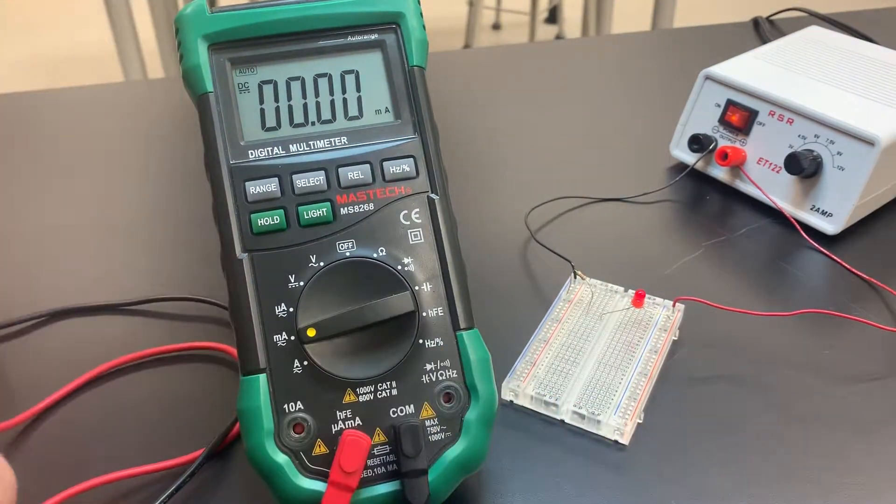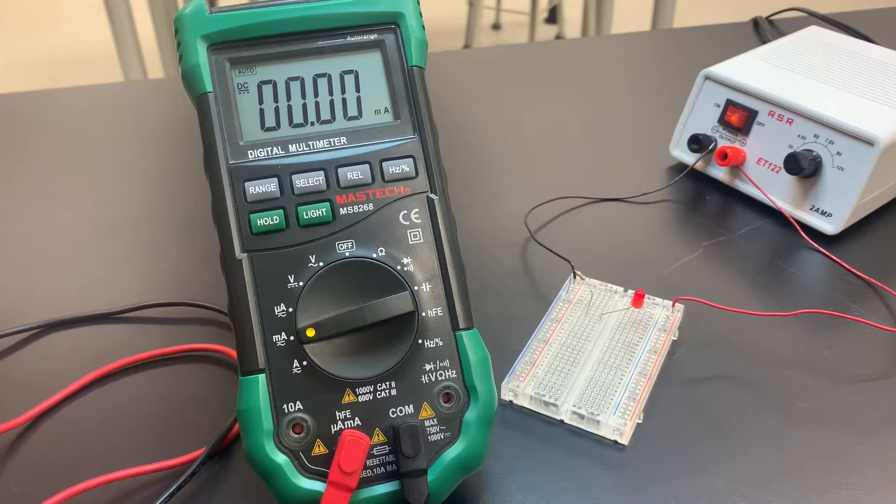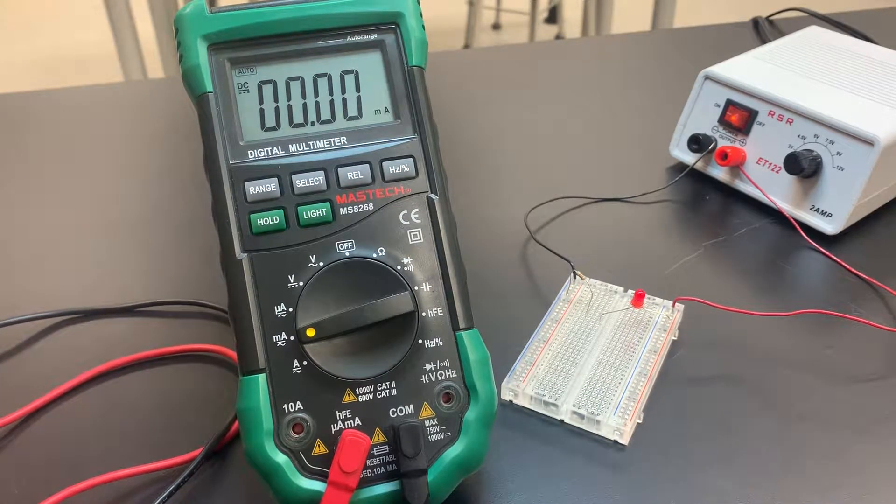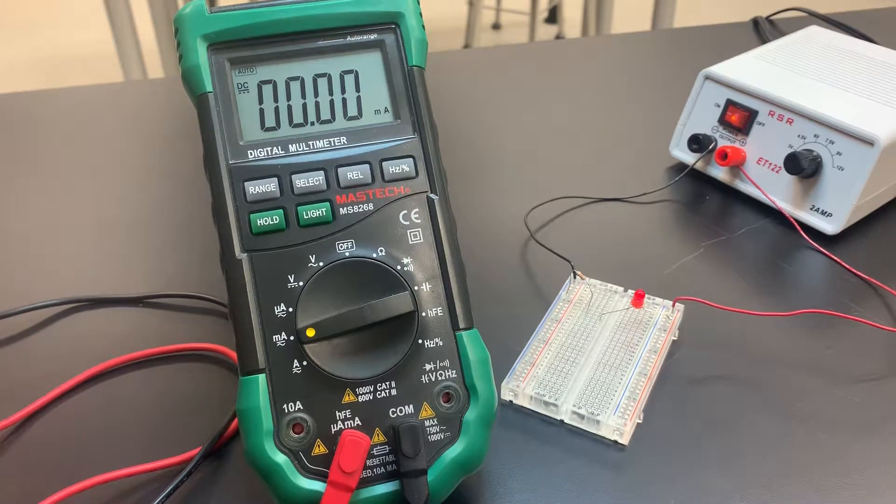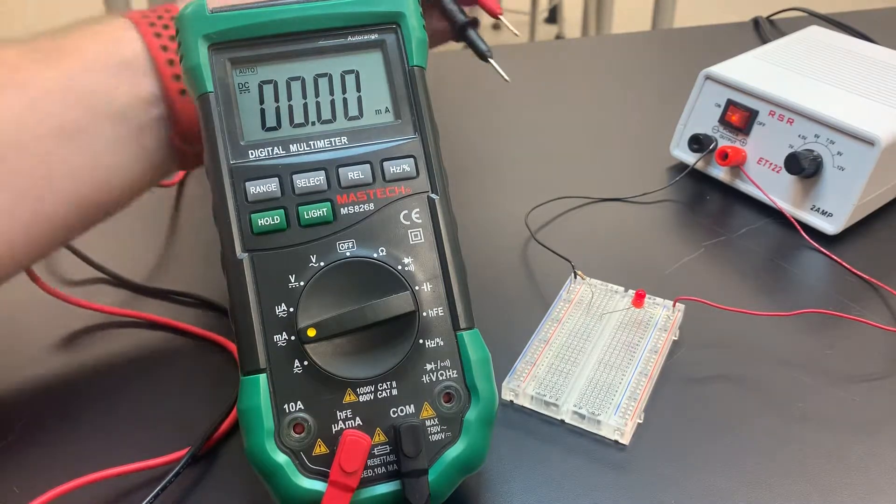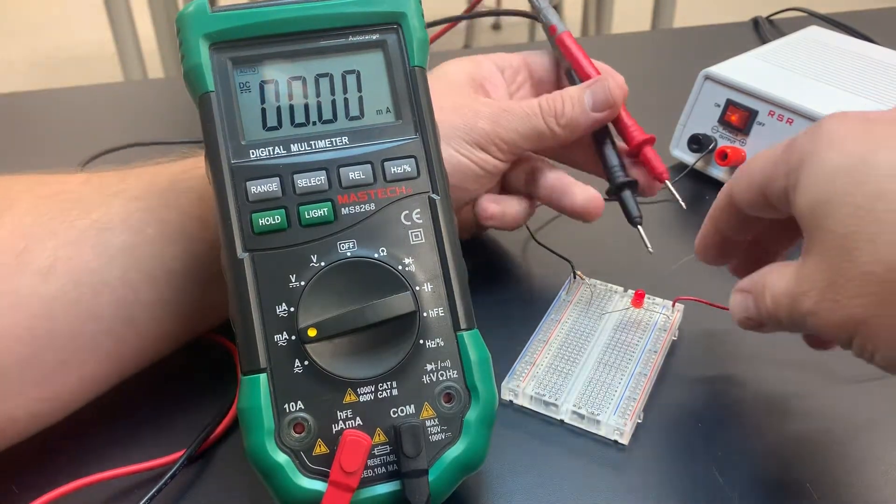Now for current, we have to measure in series, which means all of the current has to flow through our multimeter. So in order to do that, I'm going to unplug something. And let's just say in this particular instance, I'm going to unplug